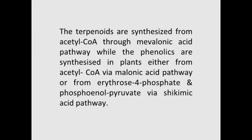The various secondary metabolites are synthesized by biosynthetic pathways which are interconnected to one another. The terpenoids are synthesized from acetyl coenzyme A through the mevalonic acid pathway, while the phenolics are synthesized in plants either from acetyl coenzyme A via the mevalonic acid pathway or from erythrose-4-phosphate and phosphoenolpyruvate via the shikimic acid pathway. On the other hand, aromatic compounds such as phenols, flavonoids and some alkaloids are synthesized from aromatic amino acids, and other nitrogen-containing alkaloids are also synthesized from aliphatic amino acids.